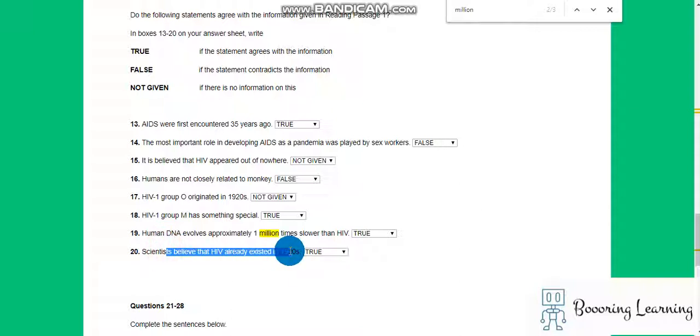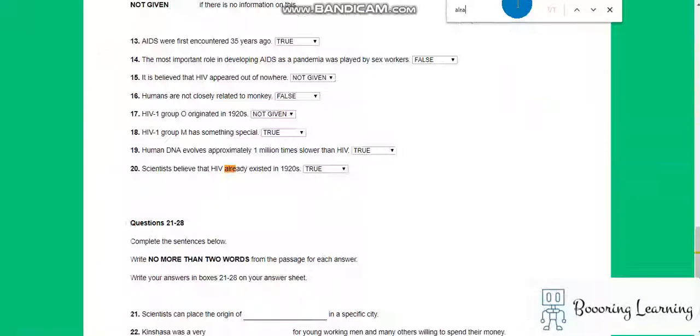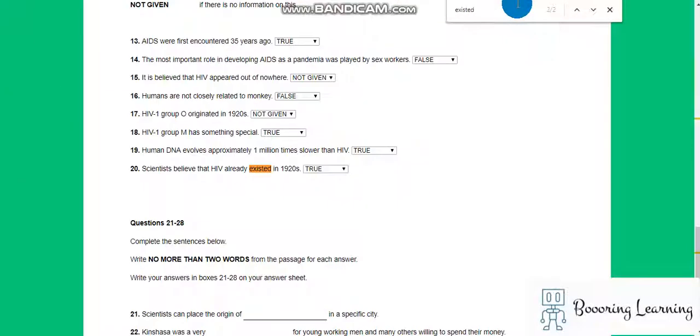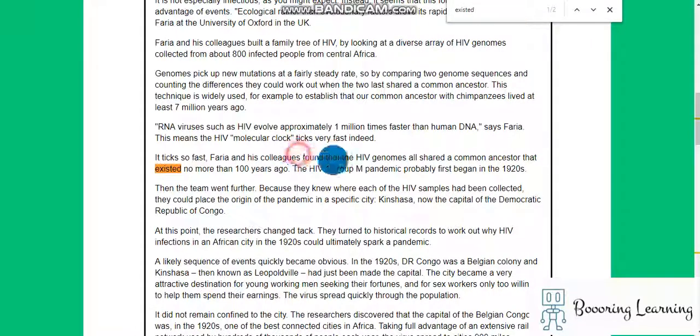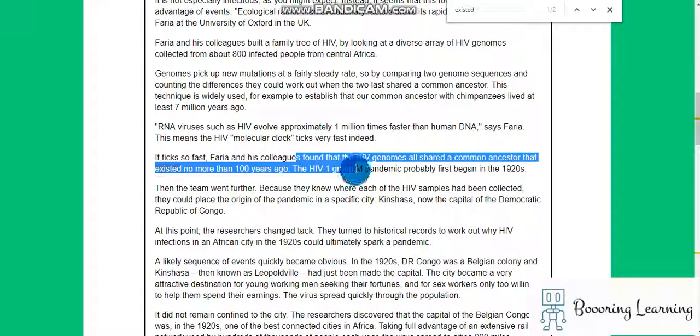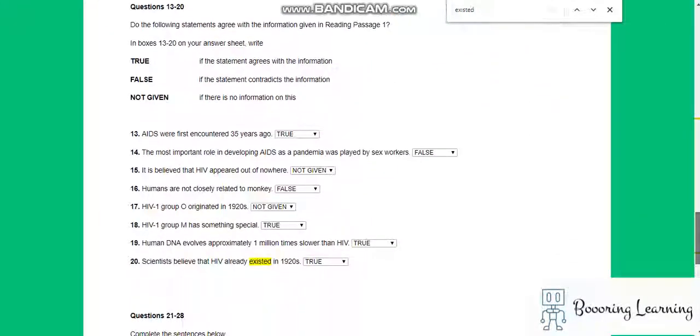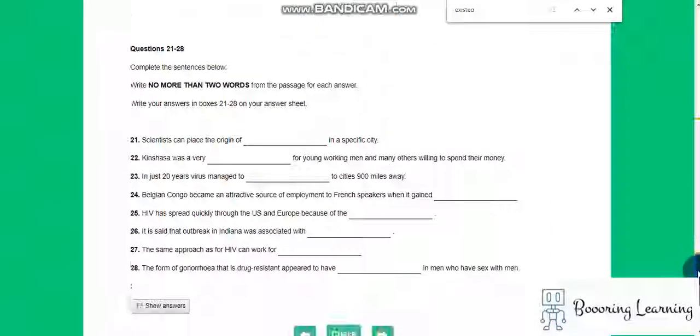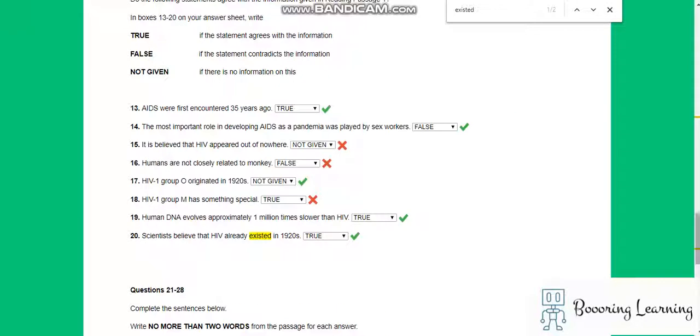Scientists believe that HIV already existed in 1920s. Already existed must be our keyword. First began in the 1920s. Pandemic. True. I feel like I have so many mistakes. At least I'm right about that. That's something special.